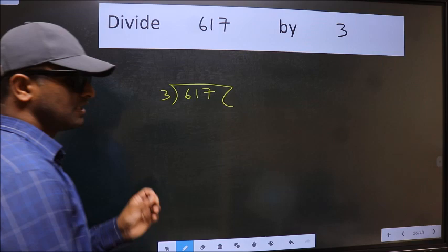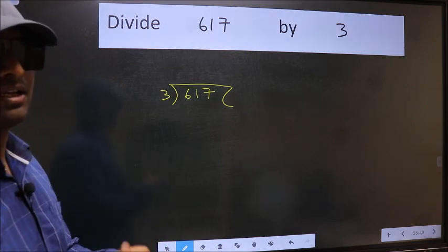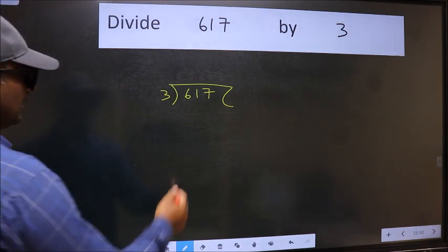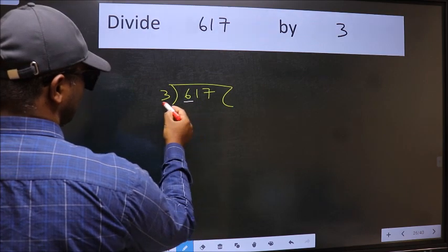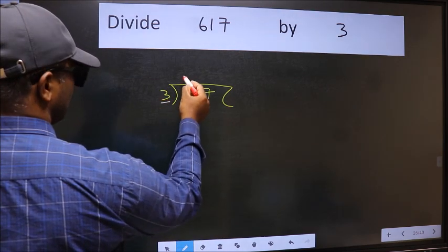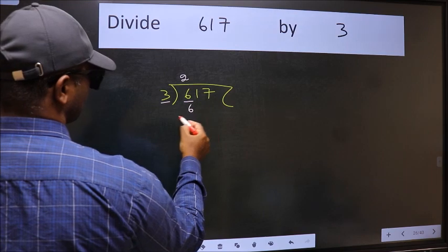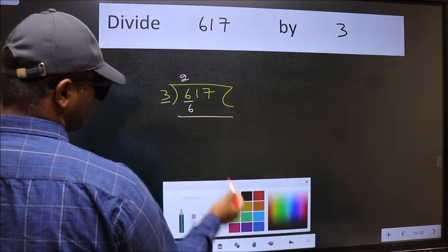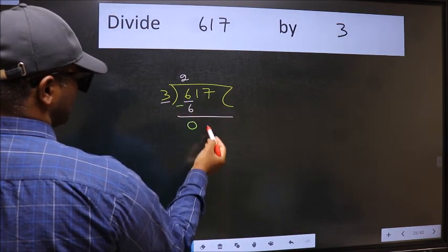This is your step 1. Here we have 6 and here 3. When do we get 6 in the 3 table? 3 times 2 is 6. Now we should subtract. We get 0.